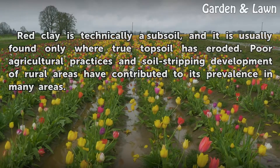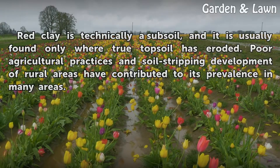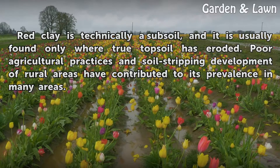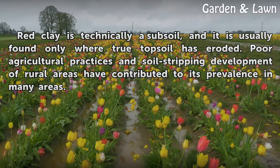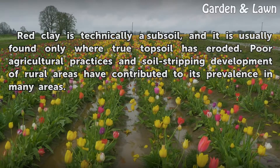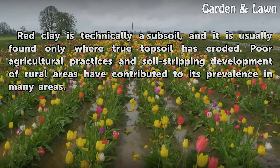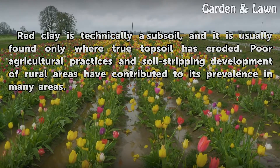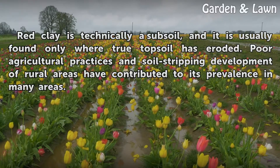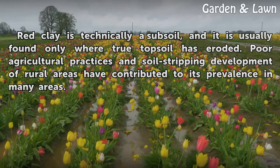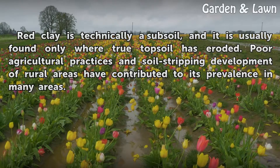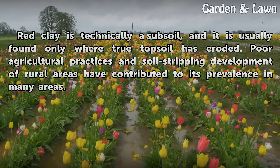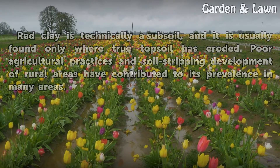Red clay is technically a subsoil, and it is usually found only where true topsoil has eroded. Poor agricultural practices and soil-stripping development of rural areas have contributed to its prevalence in many areas.